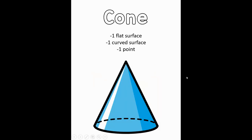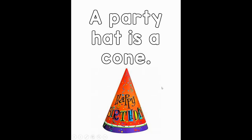The last 3D shape is called a cone. Can you say cone? A cone has one flat surface which is shaped like a circle, a curved surface in the middle, and then a point at the end. An example of an object from the real world shaped like a cone would be a party hat. A party hat has a flat surface at the bottom, a curved surface in the middle, and a point at the end.